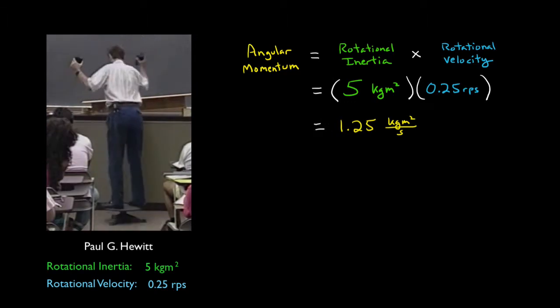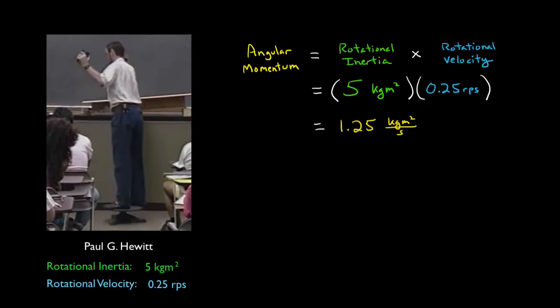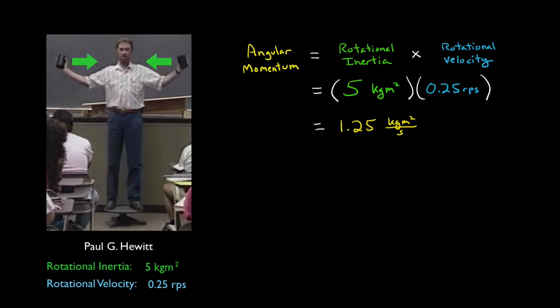So, what happens to his rotational inertia as he pulls the weights inward? As per our earlier discussions, the rotational inertia decreases. It might divide by 3, going from, say, 5 to 1.67. Less of a radius means less rotational inertia.